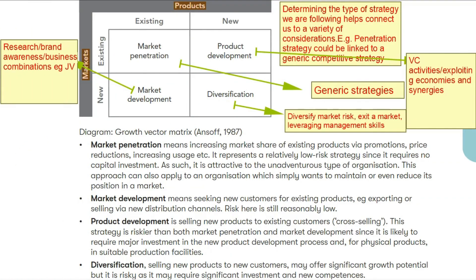This is what Ansoff's matrix looks like. On the horizontal axis it has products and on the vertical axis it has markets. It's basically using those two criteria to identify the type of strategy that the organization is thinking of implementing.